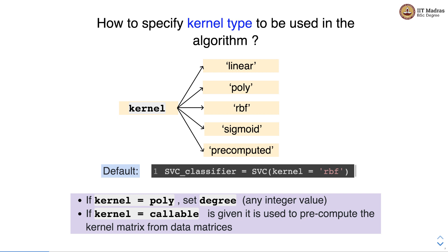If kernel is set to 'poly', we need to set an additional parameter for the degree of the polynomial, which takes any integer value. If kernel is set to 'callable', it is used to pre-compute the kernel matrix from the data matrices, allowing you to define your own custom kernel.